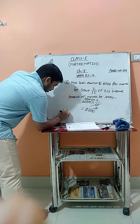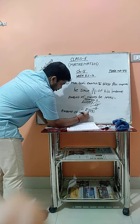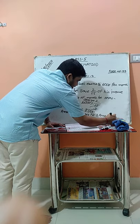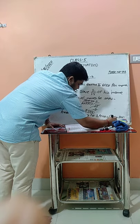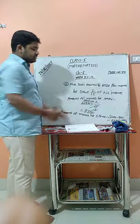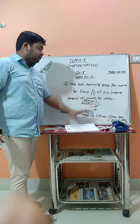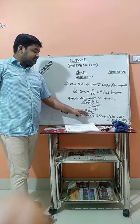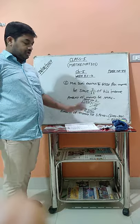Now, how much does he spend? The amount of money he spent is 6000 minus 800, which equals 5200. So this is the amount of money he has to spend. From the total money of 6000, we subtract the amount he saved, which is 800, and we get the amount of money that he spent.